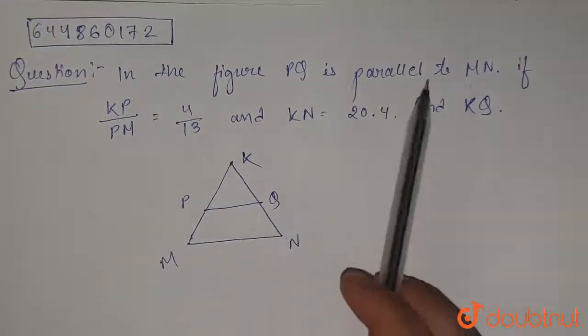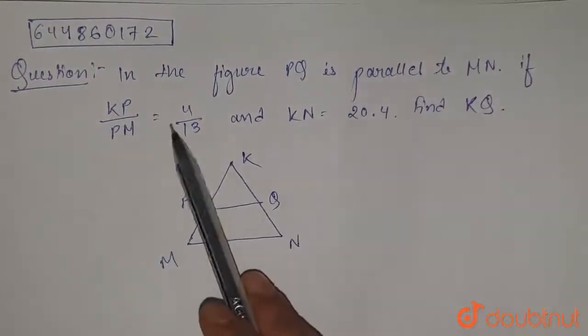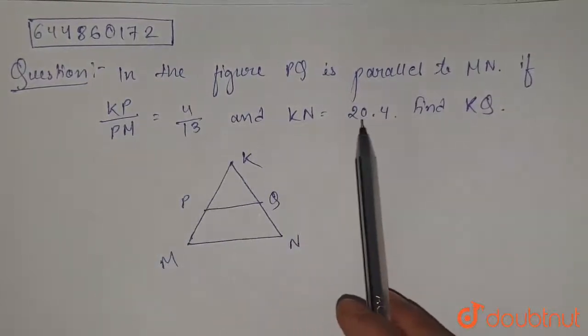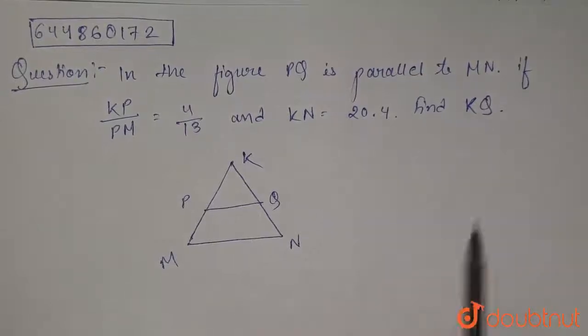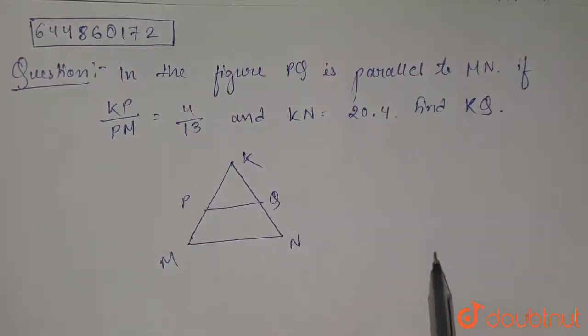In the figure, PQ is parallel to MN. If KP by PM equals 4 by 13 and KN equals 20.4, find KQ. Okay, so we are given...